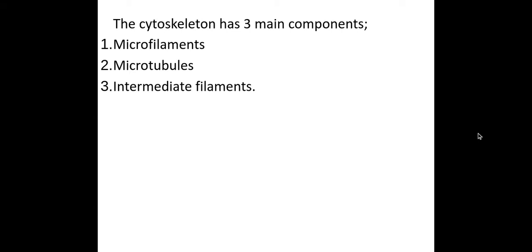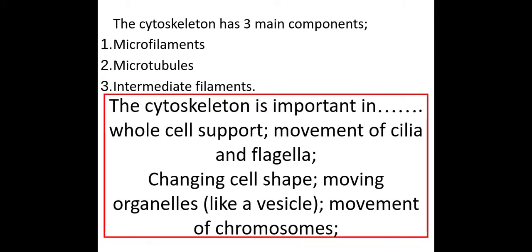So the first thing we need to know is that the cytoskeleton has three main components. It's made of microfilaments, microtubules and intermediate filaments. Now the role of the actual cytoskeleton within the cell is that it's involved with whole cell support, the movement of cilia and flagella, changing the cell shape, moving organelles such as a vesicle, it's a really good idea to give an example there, and also the movement of chromosomes in mitosis.